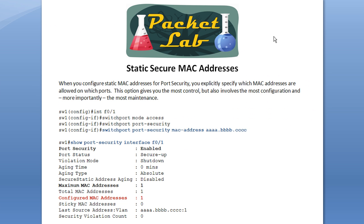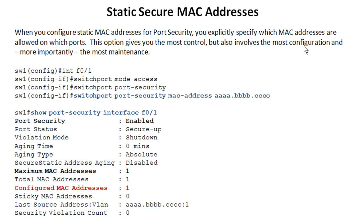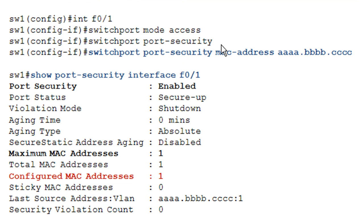Let's take a look at some of the configuration for these options, starting with static secure MAC addresses. This involves the most configuration and, more importantly, the most maintenance. It also involves quite a bit of planning because you're going to want to know the user's MAC address before you configure the switch port. The switchport port-security command turns on port security and enables that feature. After you configure that, you can go ahead and specify the various options for port security.